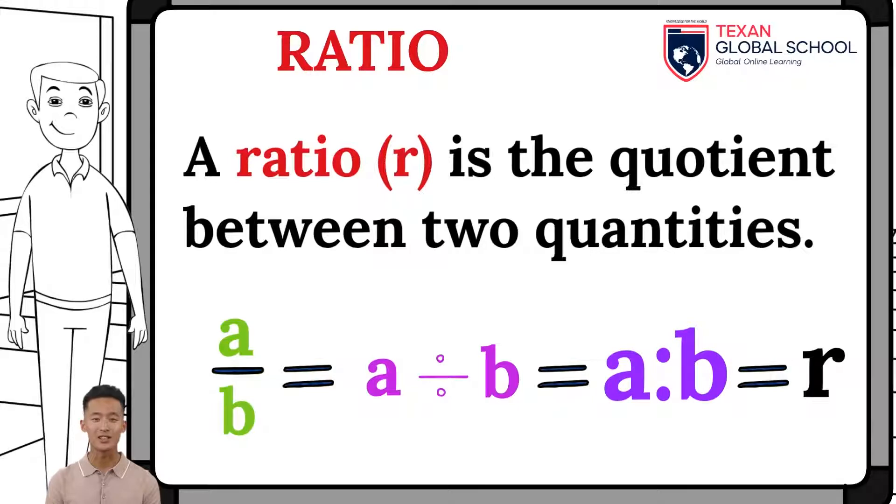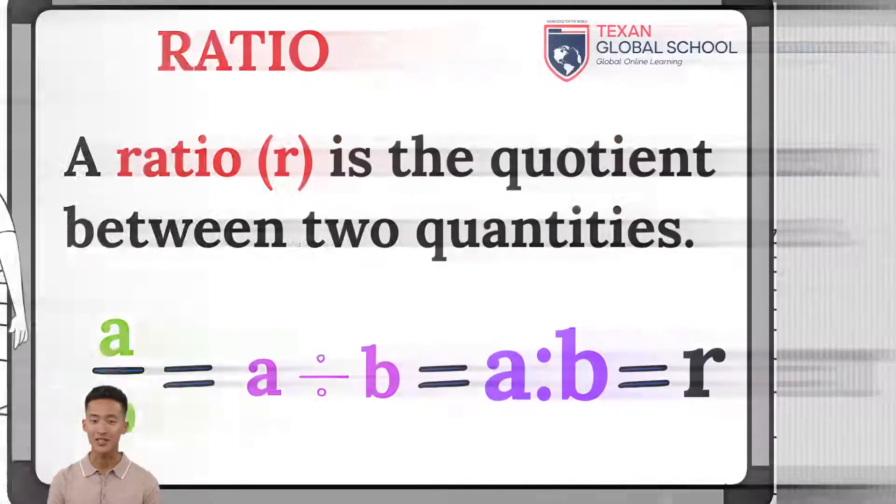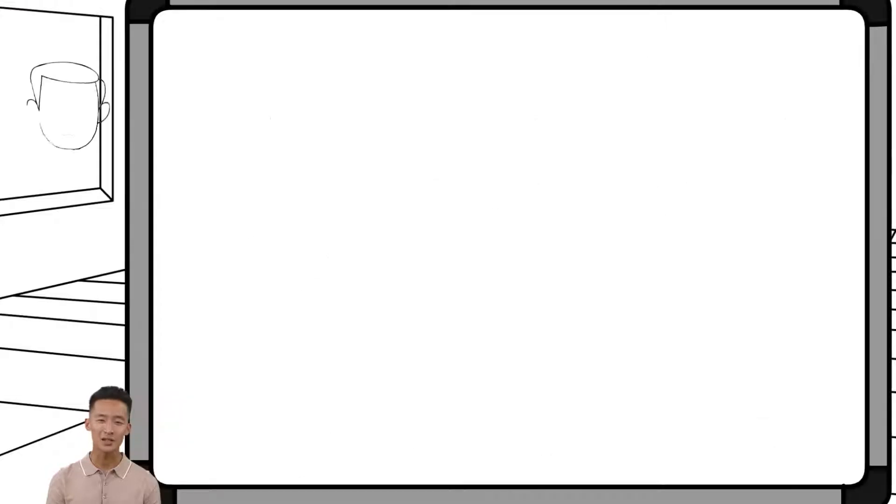A ratio is the quotient between two quantities, and it is represented in any of the ways shown on the board as A over B or A is to B, where A is the antecedent, B is the consequent, and r is the ratio.